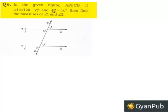Moving on to question number 6. In the given figure, AB is parallel to CD. If angle 1 is equal to 120 minus x degrees and angle 2 is equal to 5x degrees, find the measures of angle 1 and angle 2.